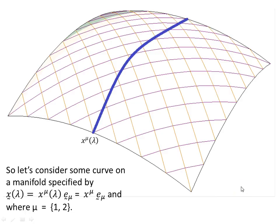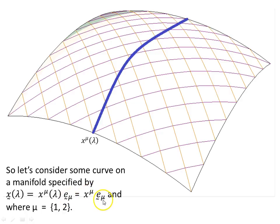Now let's consider some curve on the manifold specified by a position vector parameterized in terms of variable lambda. Each of the coordinates are functions of lambda, which is the parameter by which we parametrize the curve. The basis vector z subscript mu equals partial derivative with respect to x superscript mu, and mu takes values 1 and 2 for this two-dimensional manifold.